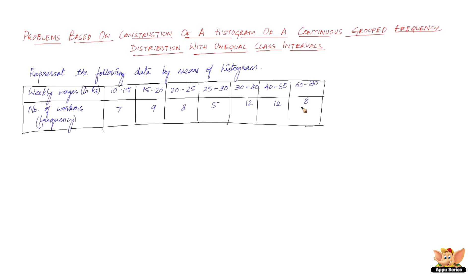Here we have the problem which says represent the following data by means of histogram. Weekly wages in rupees, the rupees is grouped as 10 to 15 rupees, 15 to 20 rupees, 20 to 25, 25 to 30. The problem is here now.